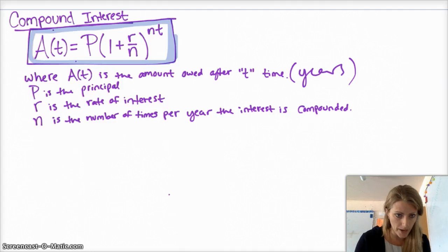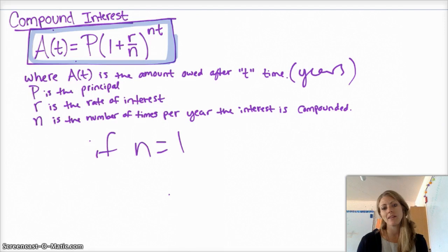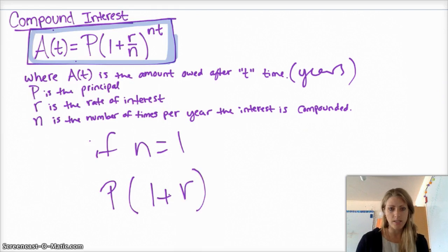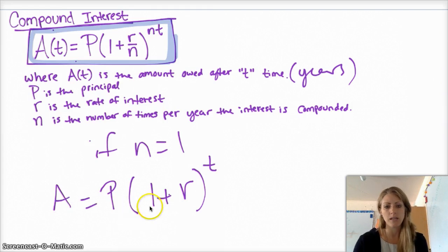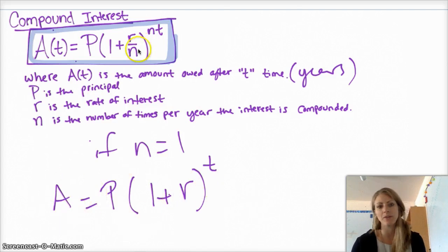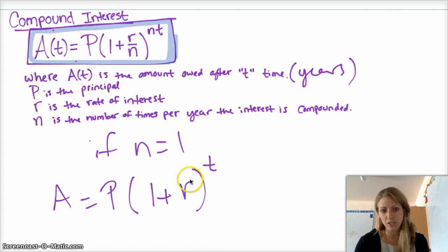So something to connect to past formulas that we've used. If n is 1, that means you compound one time per year. And then, the formula just turns into P times 1 plus r over 1, which is just r, raised to the 1 times t. Well, A equals P times 1 plus r to the t. That was our formula that we used before, before we learned about other compound interest and that you can compound it more than once per year. So, this you've seen before. This is the more complex version.